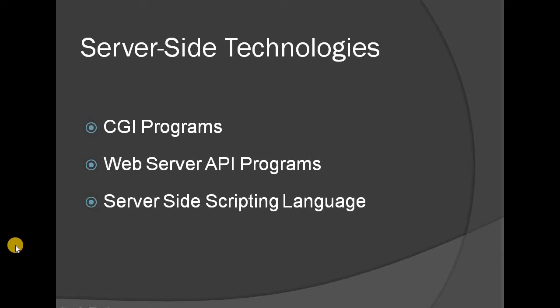What is server-side technology? There are three types. First one is CGI programs. Second is Web Server API programs, also called Web Server modules. Third is server-side scripting languages. So those are the three server-side technologies: Common Gateway Interface programs, Web Server modules, and server-side scripting languages.